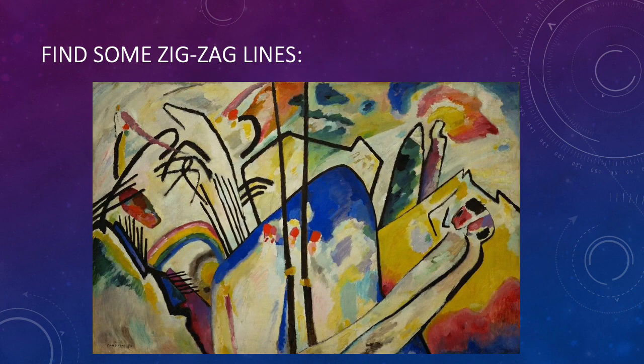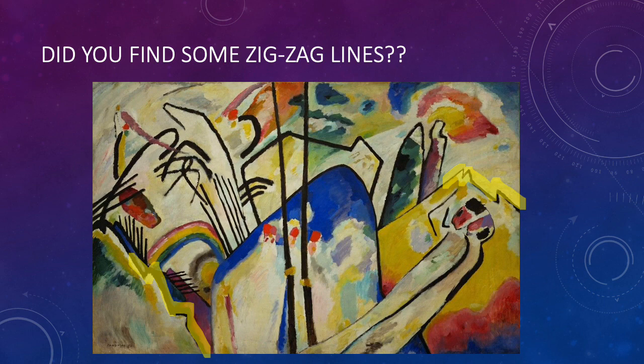Now find some zig-zag lines! Did you find some zig-zag lines? I've highlighted them in yellow. Zig-zag lines go back and forth, and up and down, and always end each time you change direction with a point. They look like stairs, or teeth.